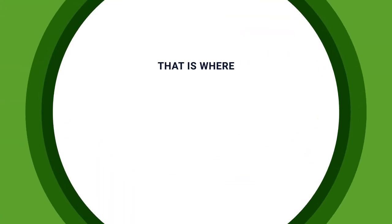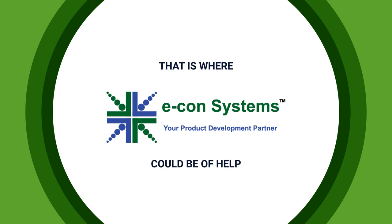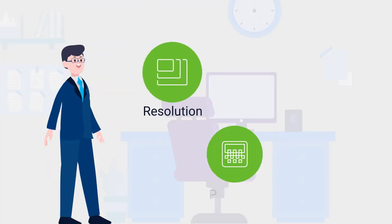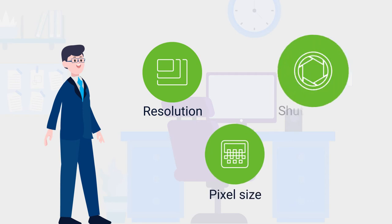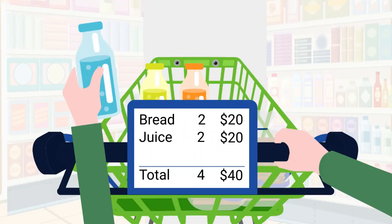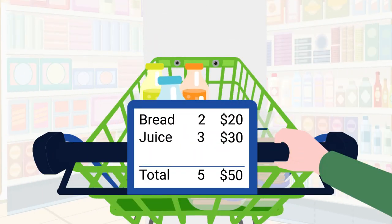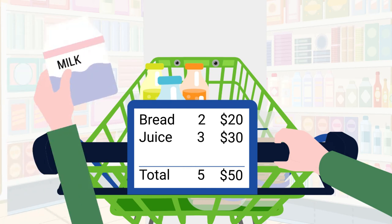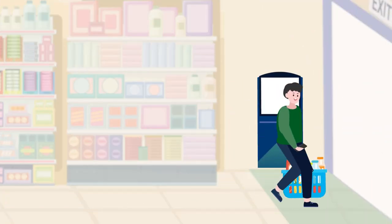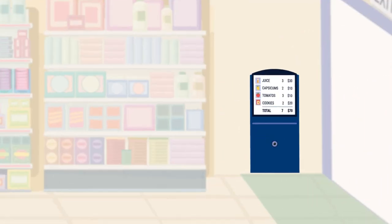That is where Econ Systems could be of help. Econ could help Jordan choose a sensor with the right resolution, pixel size, and shutter type to ensure accurate recognition of objects in John's shopping cart, either when John drops items into the trolley or does automated checkout at the payment counter.